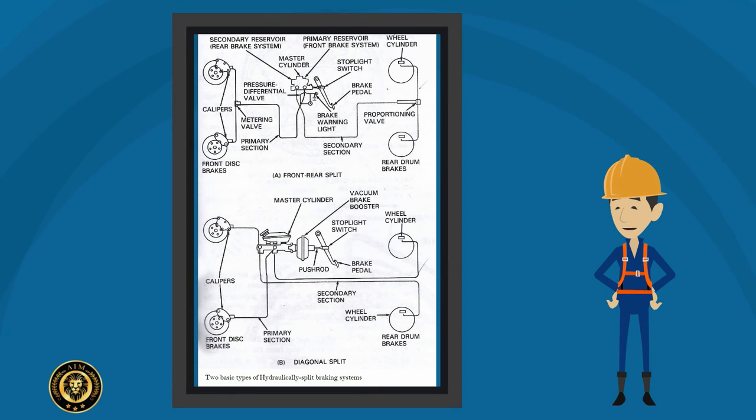In a dual braking system, the hydraulic system has a primary section and a secondary section. The primary section is always closest to the firewall. However,